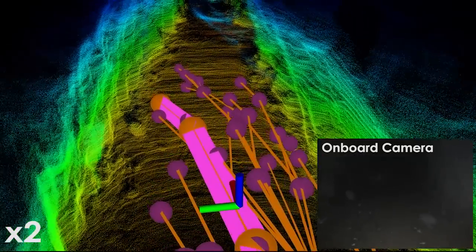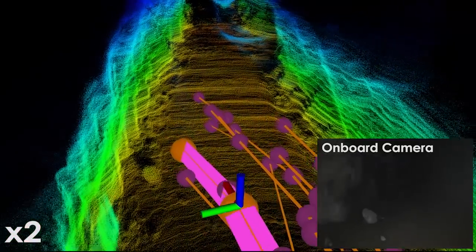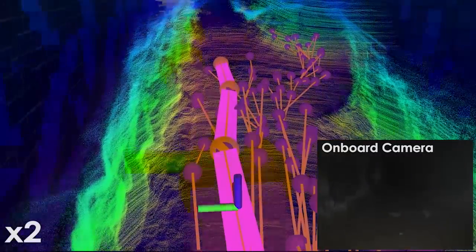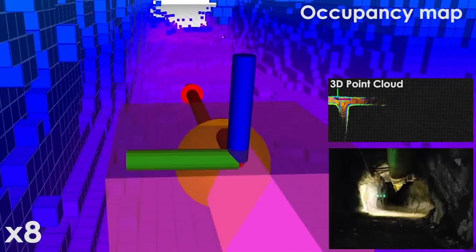More specifically, the local planner first utilizes the rapidly exploring random tree or RRT-STAR algorithm to generate collision-free paths and then selects a good exploration path primarily based on the calculated volumetric gain.